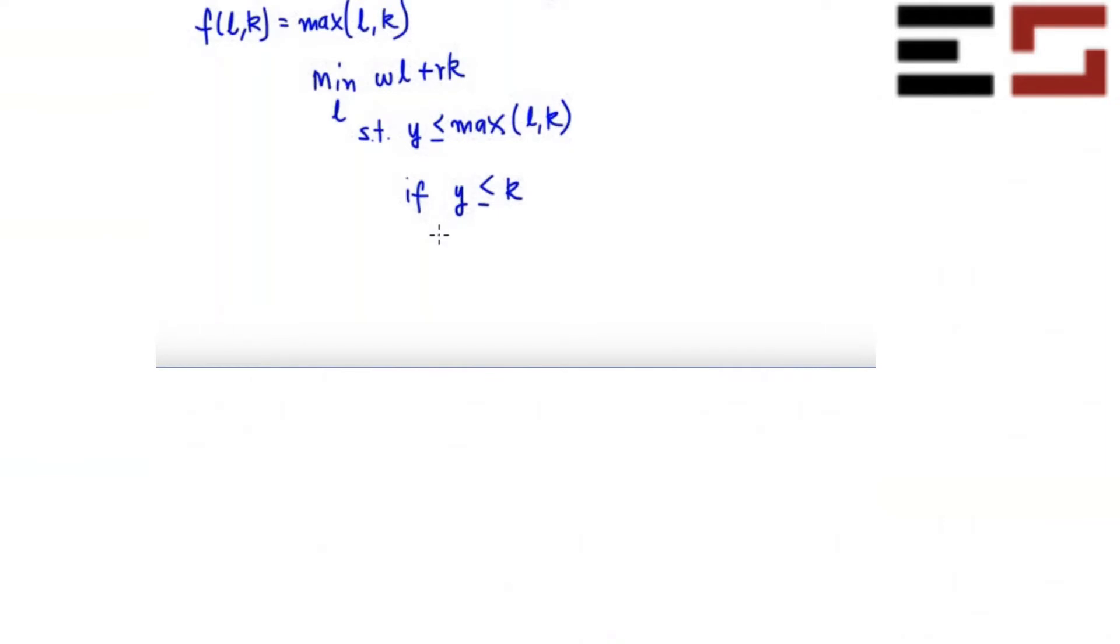What are you going to choose? Zero, right? You're going to choose zero units of labor. The reason is because capital is enough to produce what you wanted to produce. This is y less than or equal to max(L,K), so capital, even if you choose zero, this constraint is met.